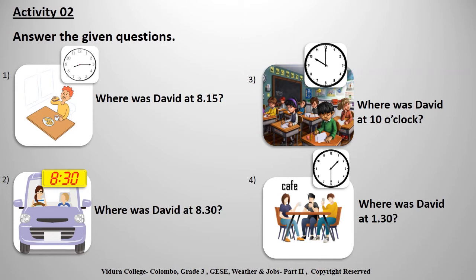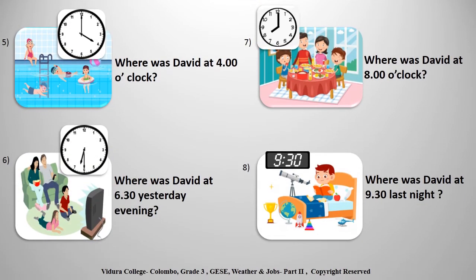First: Where was David at 8.15? Second: Where was David at 8.30? Third: Where was David at 9 o'clock? Fourth: Where was David at 1.30? Fifth: Where was David at 4 o'clock? Sixth: Where was David at 6.30 yesterday evening? Seventh: Where was David at 8 o'clock? Eighth: Where was David at 9.30 last night?